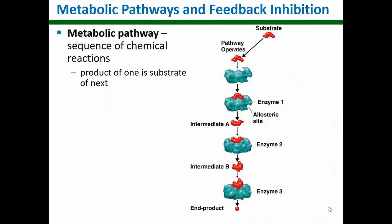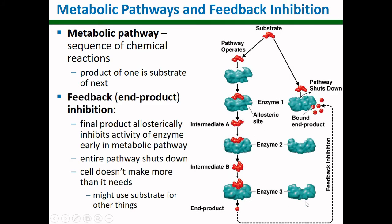Enzymes in our cells can often work in long chains of enzymatic reactions called a pathway, where one product of an enzymatic reaction is the substrate of the next, and this goes on and on. Something cool our cells can do is shut off this pathway by having one of the end products of an enzyme toward the end of the pathway inhibit an enzyme at the beginning. This is called feedback inhibition, and it helps ensure that our cells don't make more of something than they need — resources and energy are limited, so feedback inhibition inhibits a chain of enzymes by a product at or near the end inhibiting an enzyme at the beginning.